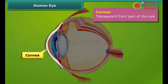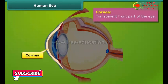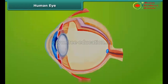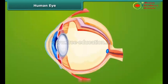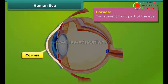Cornea: It is the transparent front part of the eye. It does not have blood vessels.